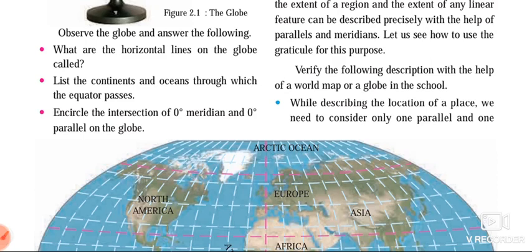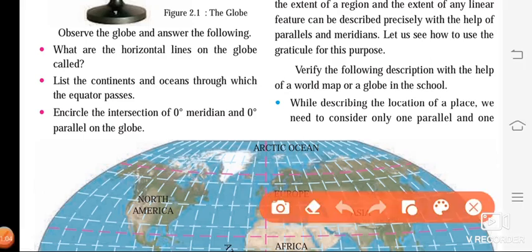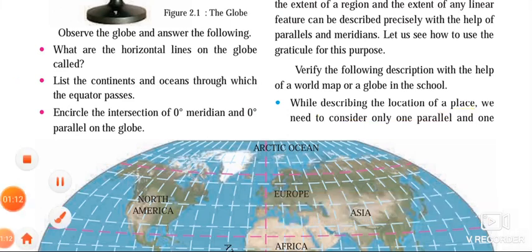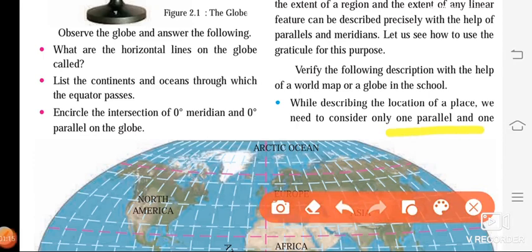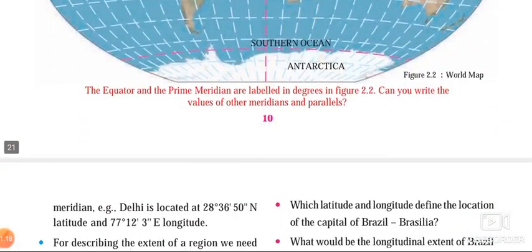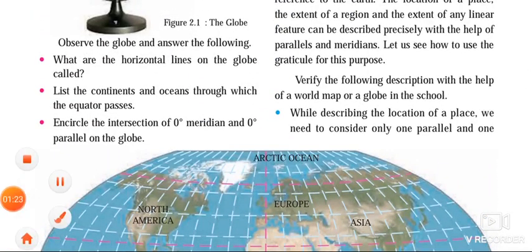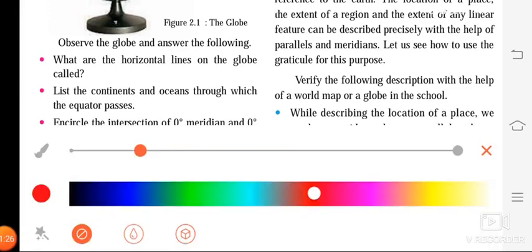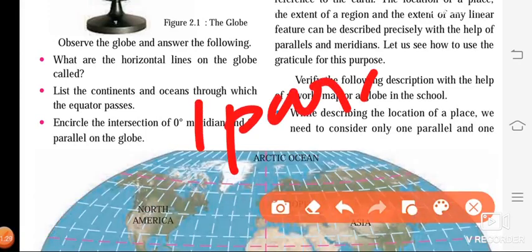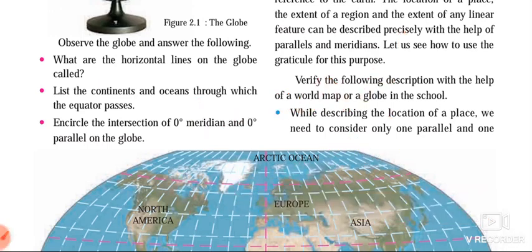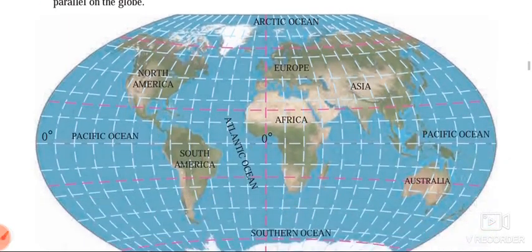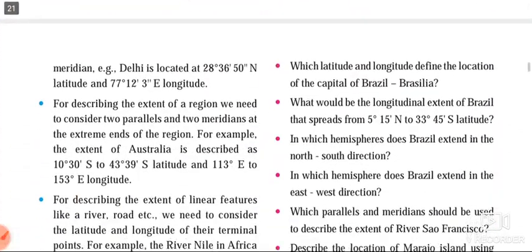The first thing we learned was describing the location of a place. To describe the location of a place, we usually need one parallel and one meridian. Always remember: to describe or to locate any place, we always require one parallel and one meridian. When we use one parallel and one meridian, we are able to show the location of a place.